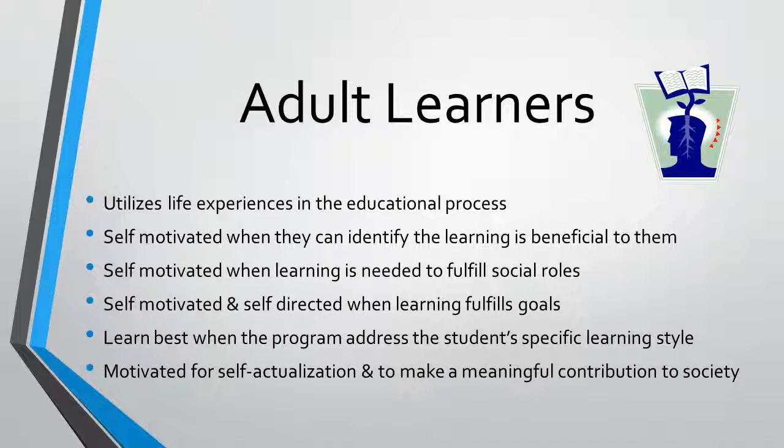Adults are self-directed and self-motivated and have developed specific learning styles that assist them with learning new knowledge and skills. Unlike a child's learning environment which is structured, the adult learning environment is self-established and goal-directed. These are a few key characteristics of adult learners identified by Harrington and Terry in your course textbook on page 129: utilizing life experiences in the educational process; self-motivated when they can identify the learning is beneficial to them; self-motivated when learning is needed to fulfill social roles; self-motivated and self-directed when learning fulfills goals; learn best when the program addresses the student's specific learning style; and motivated for self-actualization and to make a meaningful contribution to society.